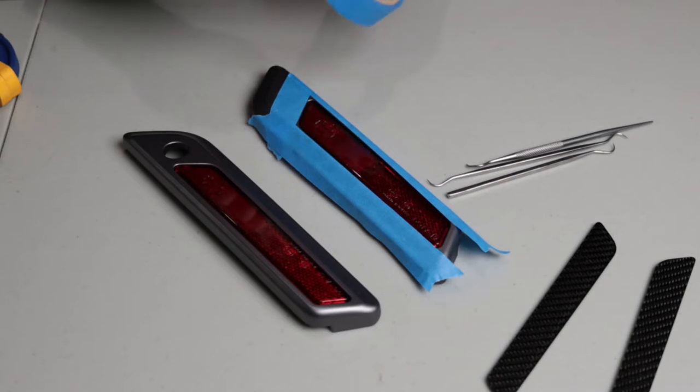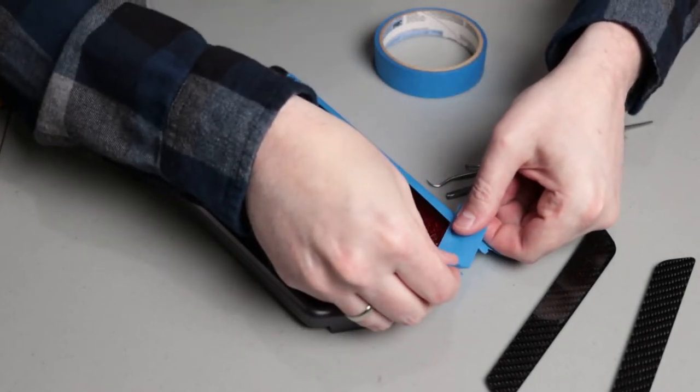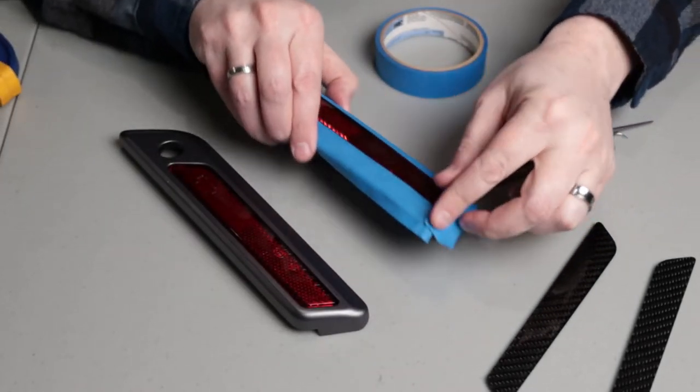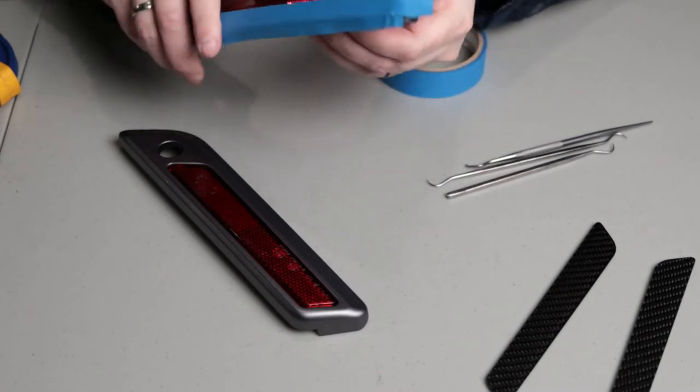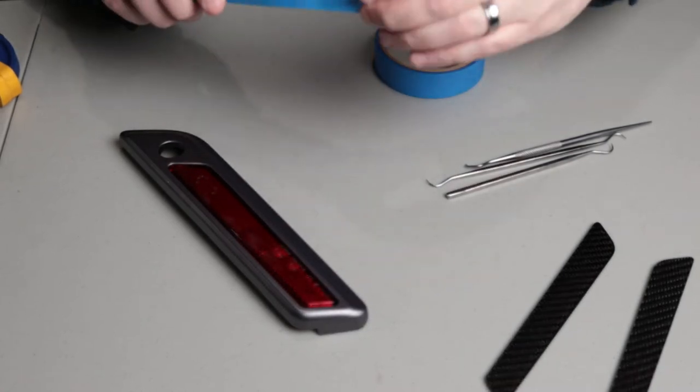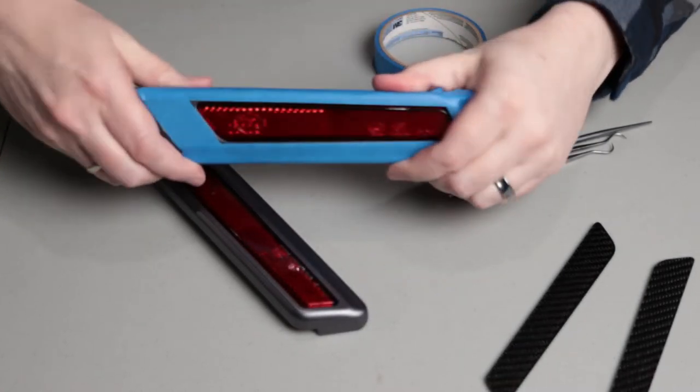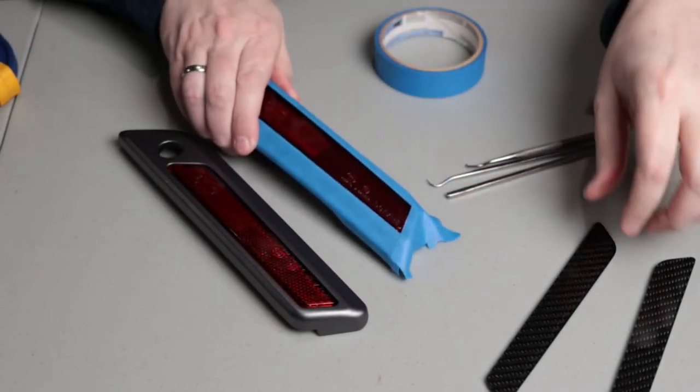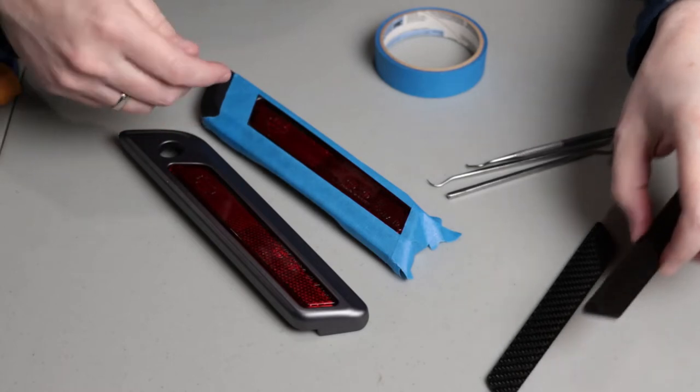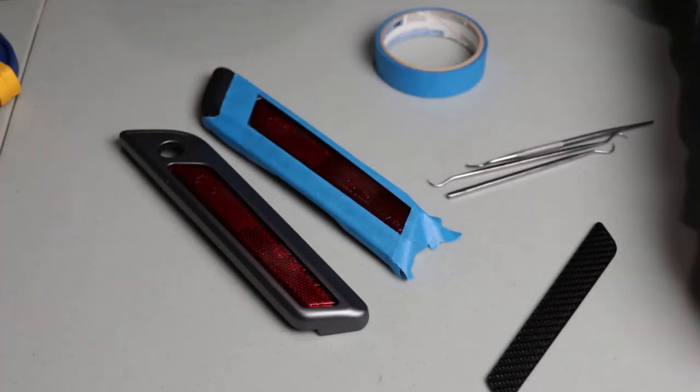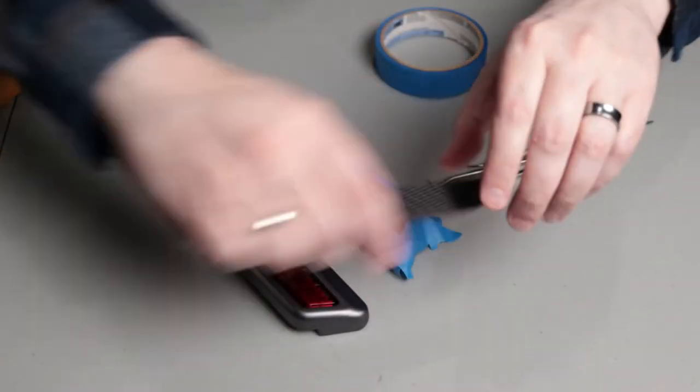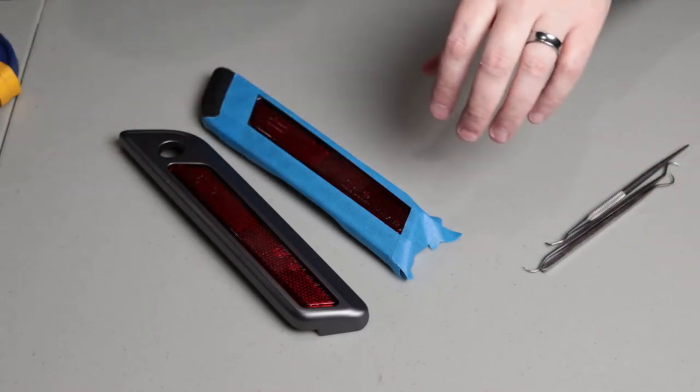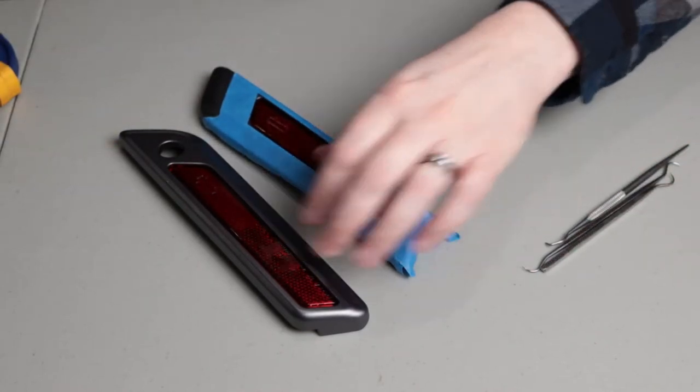All right there we go so again this is just on here for no other reason than just to kind of protect the paint. So I have that covered and now I'm just going to use a heat gun a little bit and I'm going to heat up this reflector and I'm going to try to start to get that to peel out of there. So let's get to work and see if we can get this to happen.